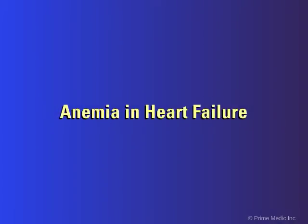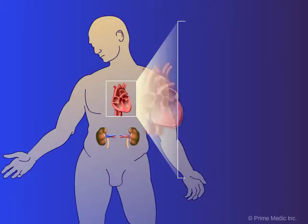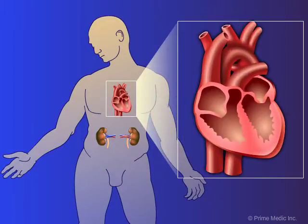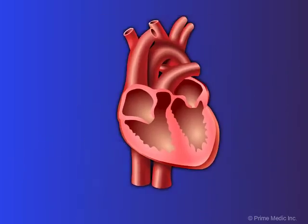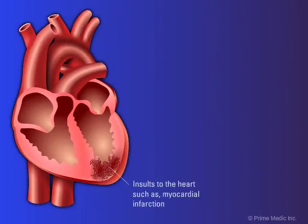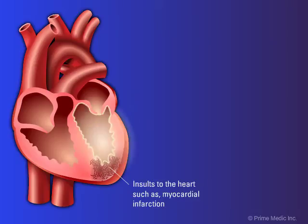Anemia in Heart Failure. Acute injury to the heart triggers a number of responses. Beyond the healing of the inciting injury, the other areas of the heart undergo remodeling with the intent of compensating for the effects of the injury. These changes are often maladaptive.